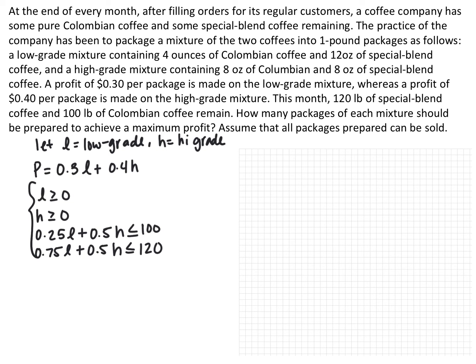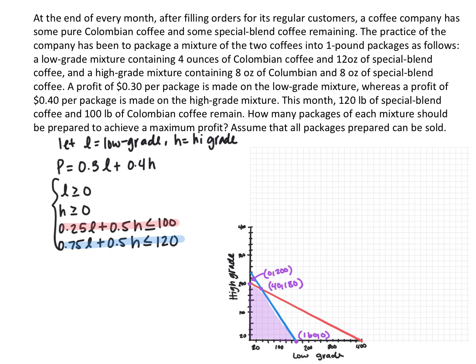Graph the system of inequalities. The red line represents the Colombian constraint: 0.25L + 0.5H ≤ 100. The blue line represents the special blend constraint: 0.75L + 0.5H ≤ 120. Everything must be positive, so the purple shaded area is our inequality solution. The feasible corner points are (0, 200), (160, 0), and (40, 80). If you can't find these visually, solve the system of equations at the intersection point.